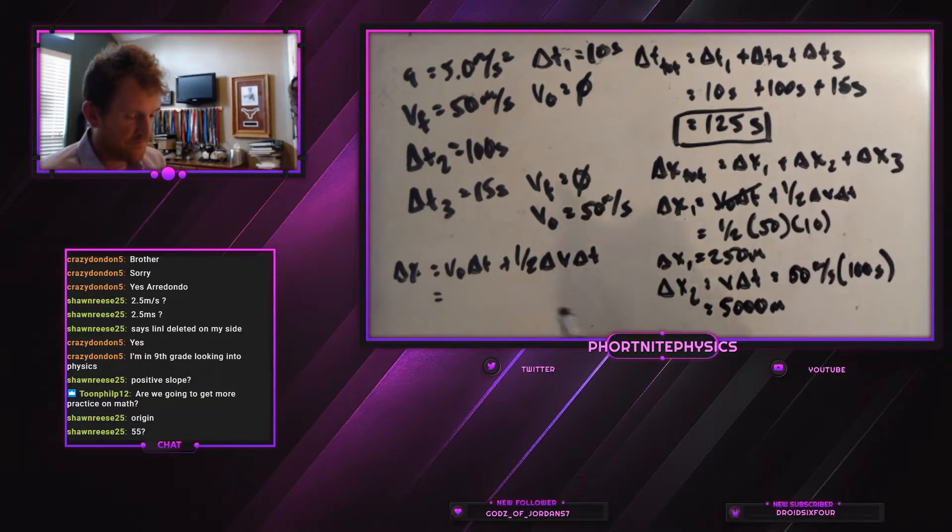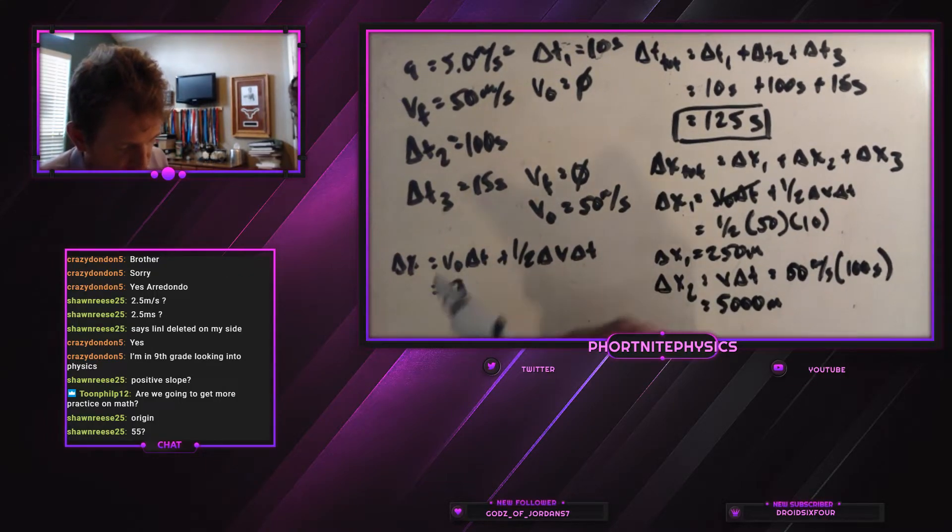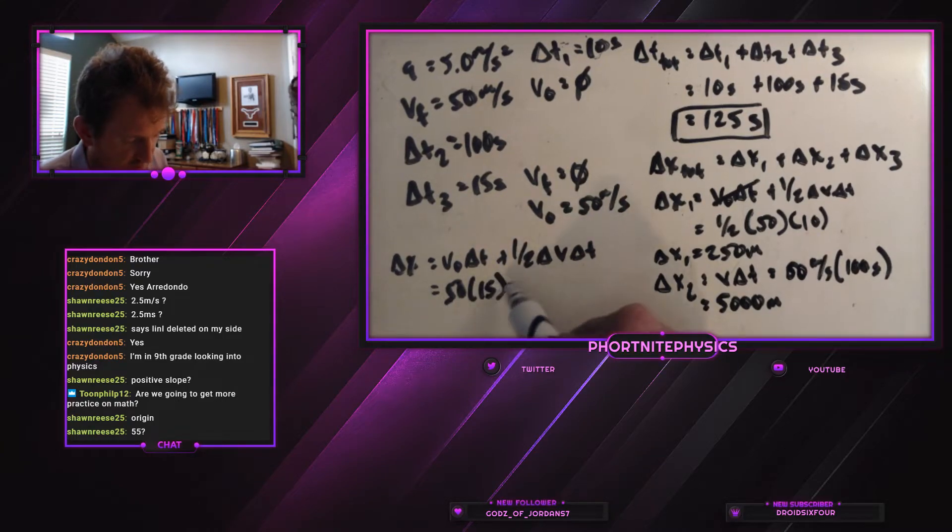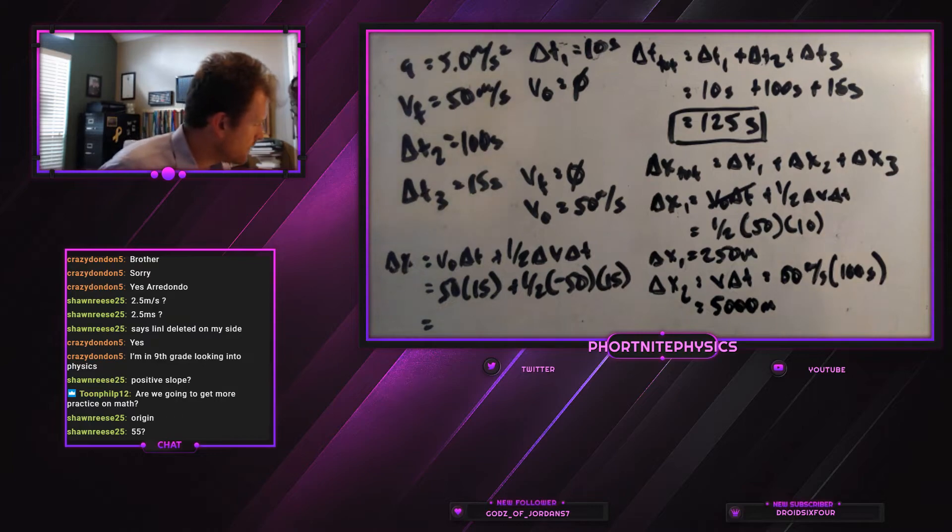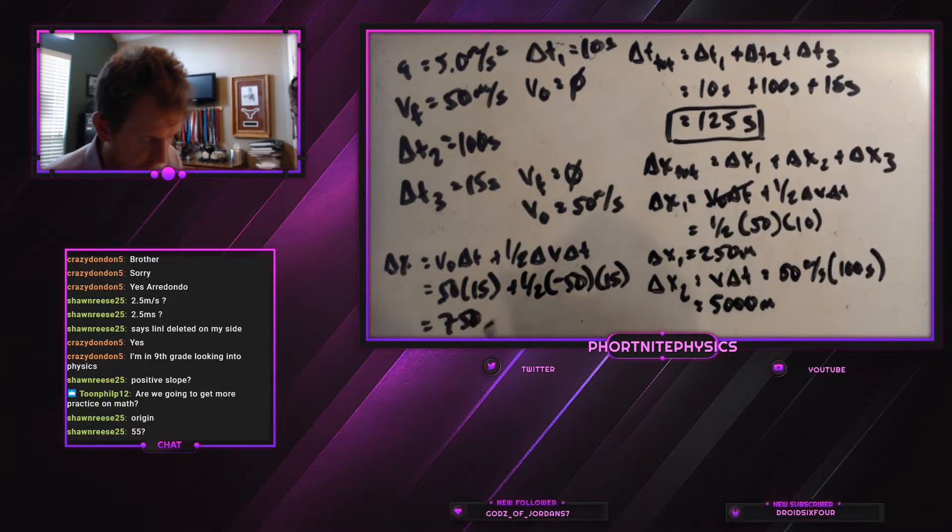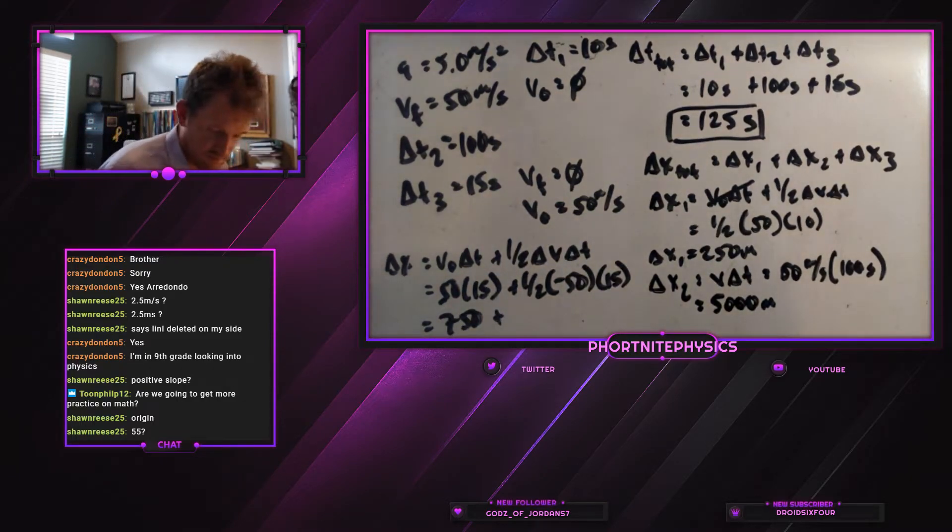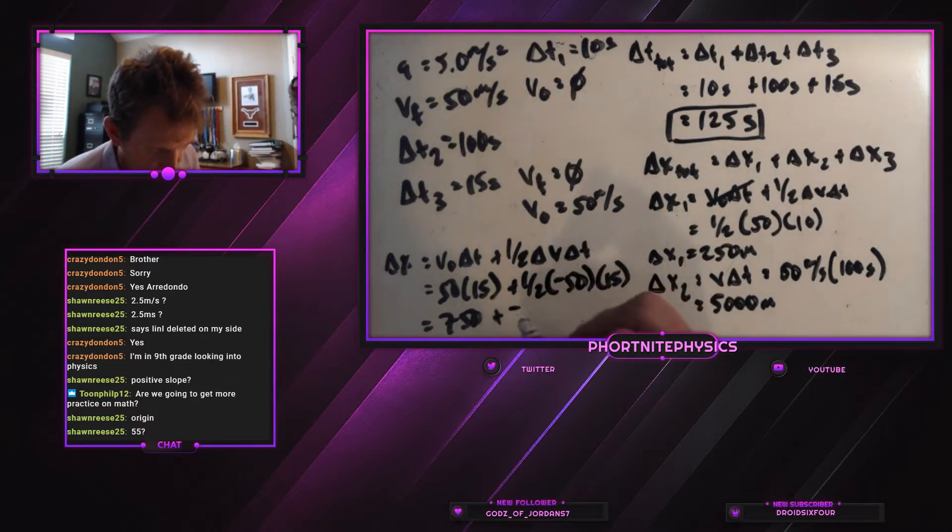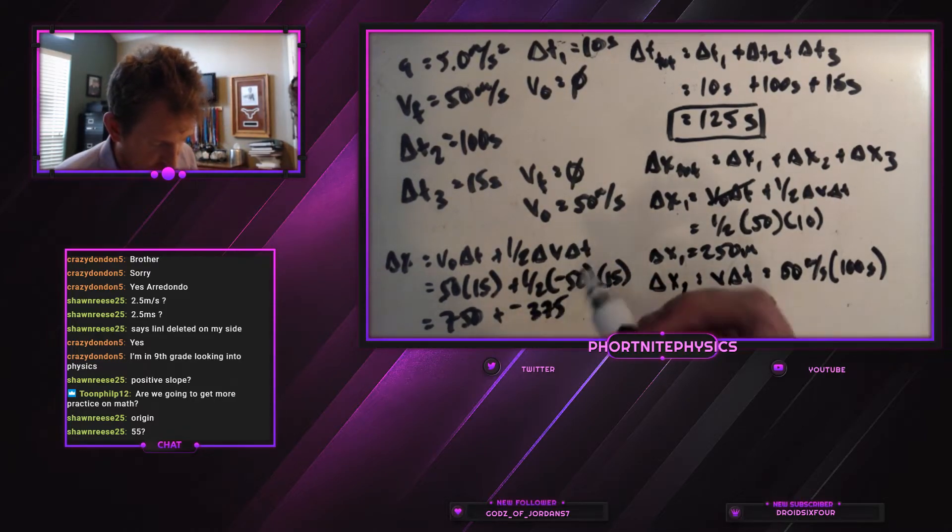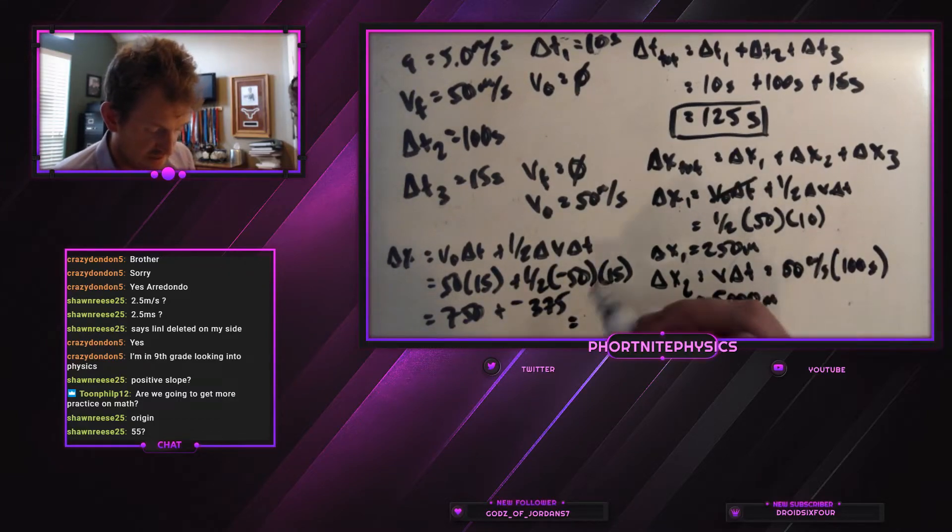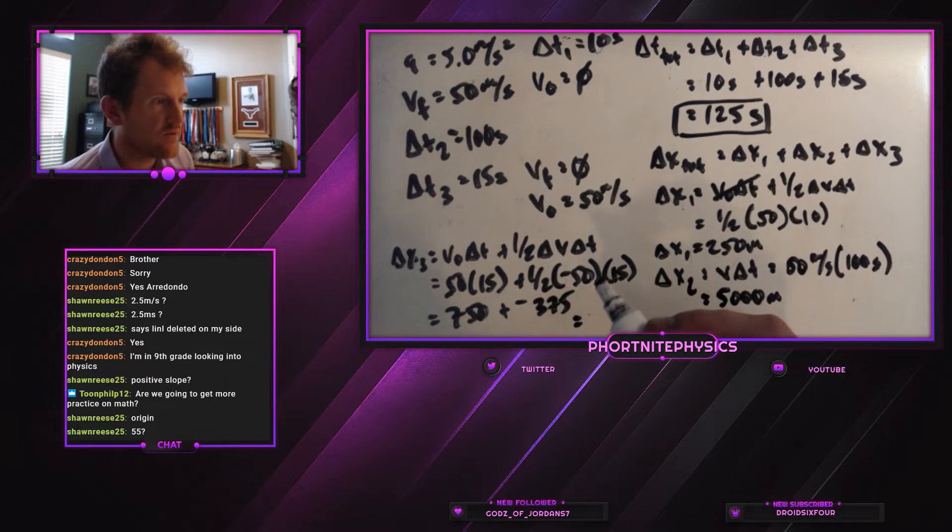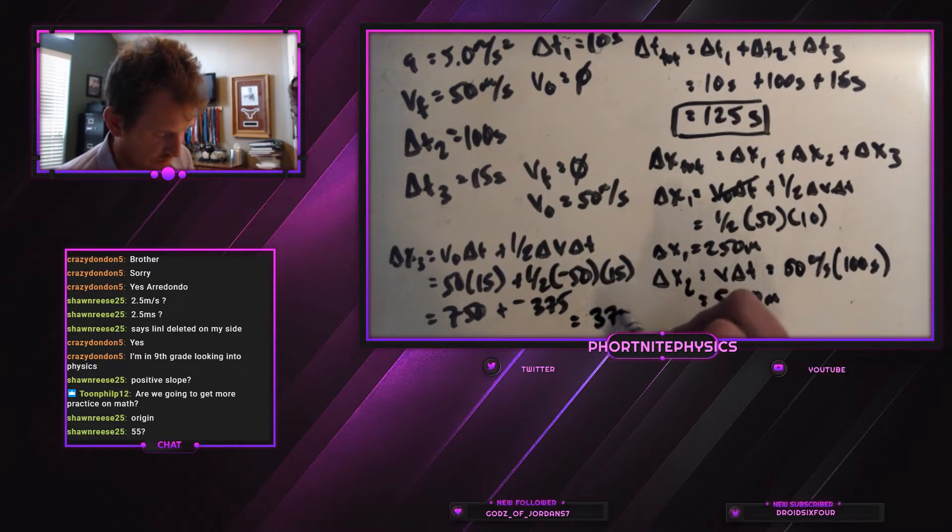Delta x equals v0 delta t plus 1 half delta v delta t. We know our delta v is from 50 to 0, so negative 50. Our initial velocity in this section is 50 multiplied by 15 seconds plus 1 half negative 50 multiplied by 15 seconds. So 50 times 15 is 750 plus half, so negative half of that or 375. And so our delta x3 is 375 meters.